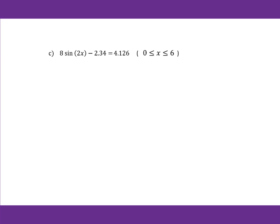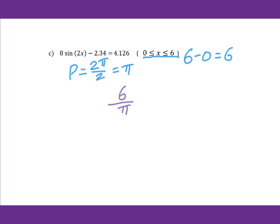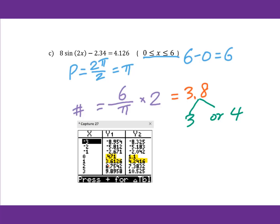For another problem: 6 minus 0 equals 6 for the range. The period equals 2π over 2, which is π. So we compute 6 over π times 2, giving approximately 3.8. That means 3 or 4 solutions, and we got 4 solutions for that equation.